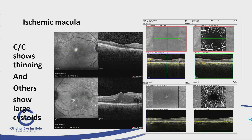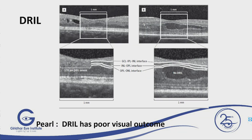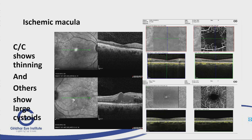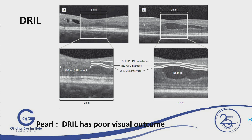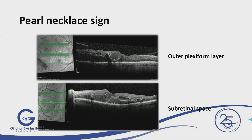Another important thing is disorganized retinal inner layers. The left eye may look better clinically, but the inner retinal layers — ganglion cell layer, IPL — are not visible, while on the right side all layers are identifiable. The right eye actually has better prognosis. Similarly, you have to look for the ELM and outer ellipsoid line — if those are intact, the outcome is better.